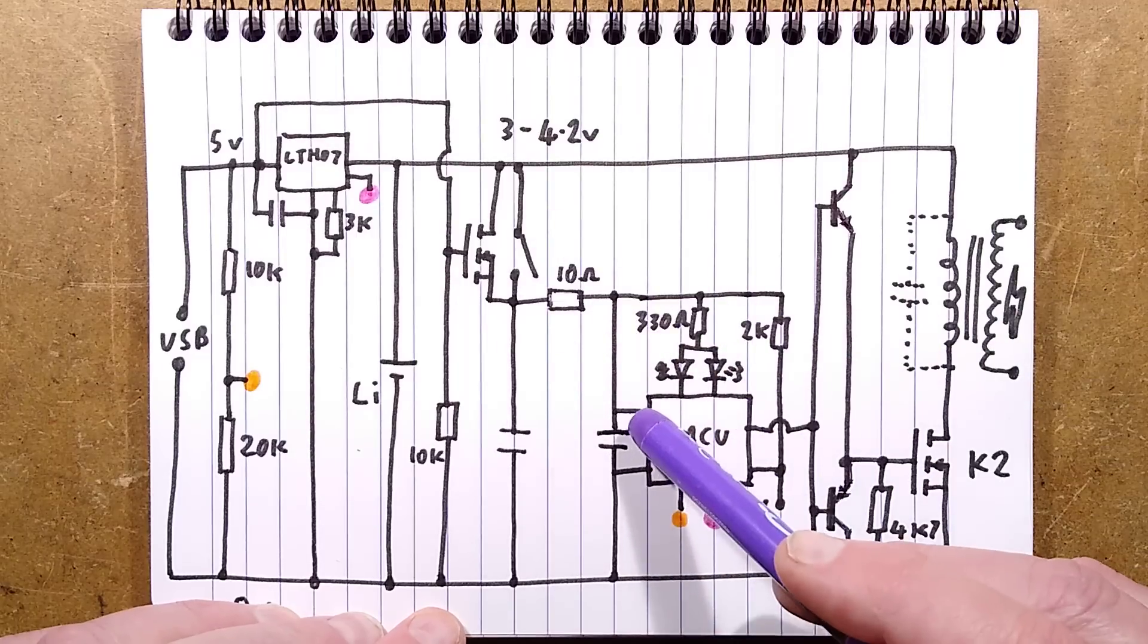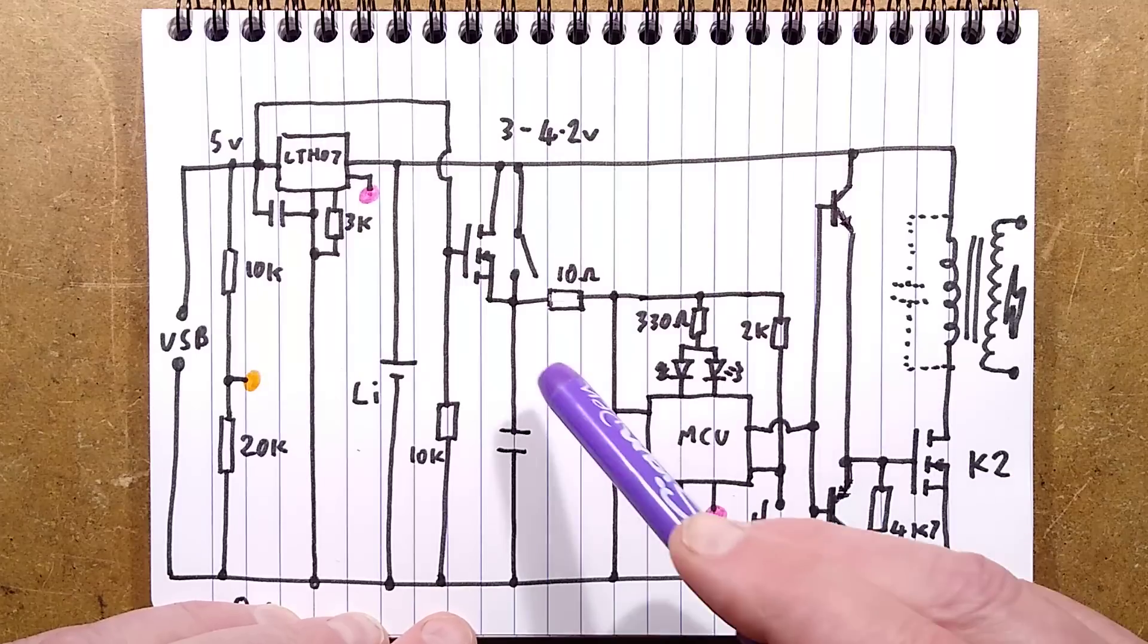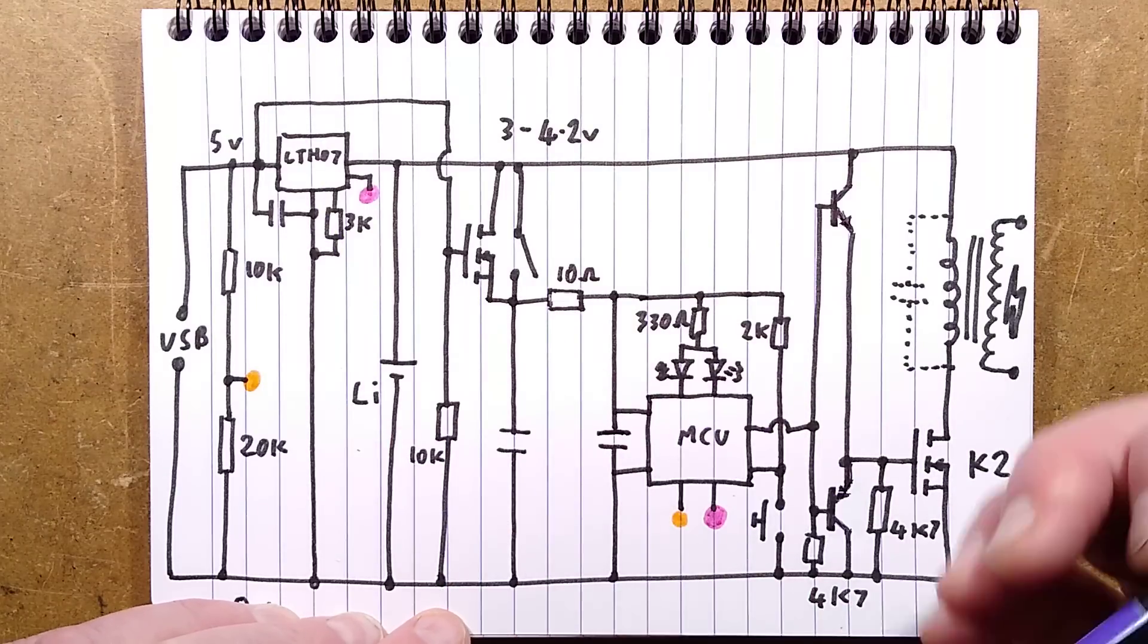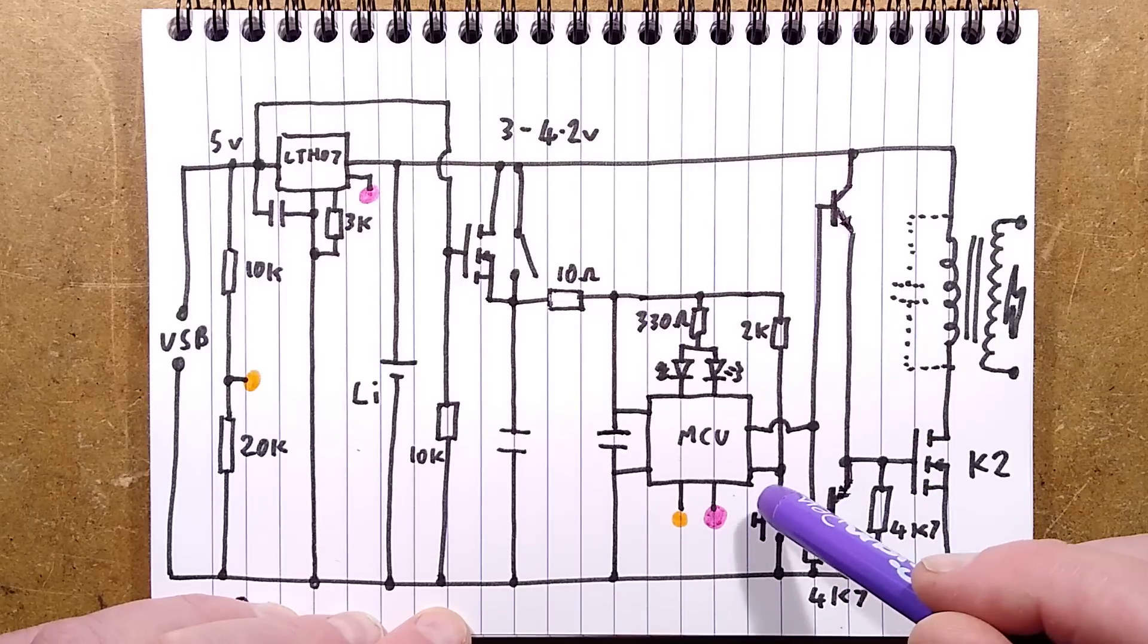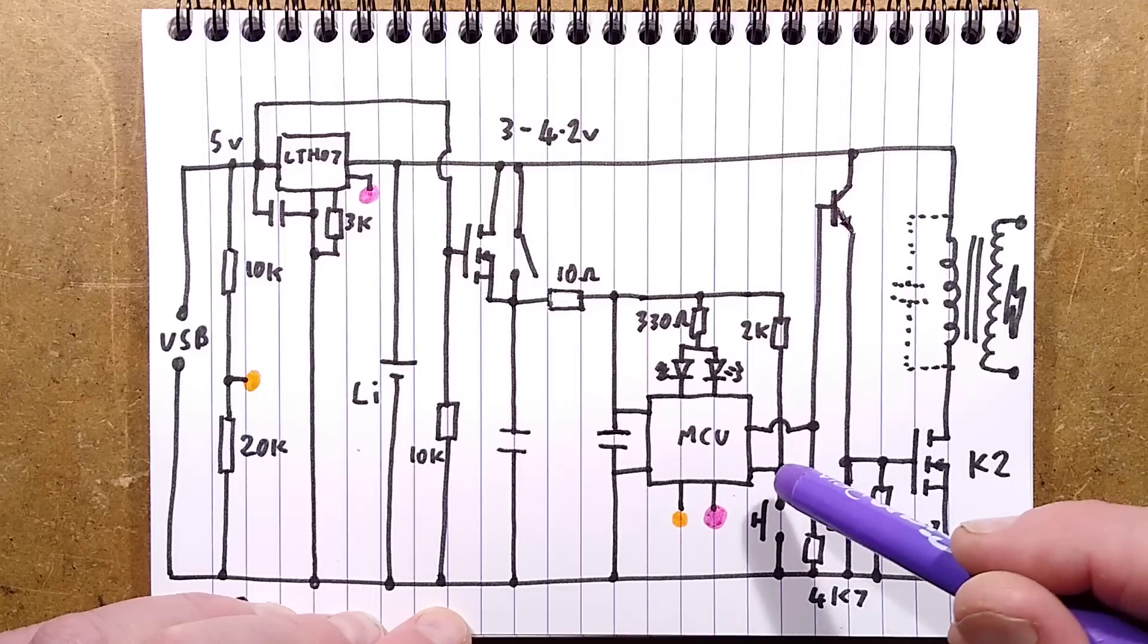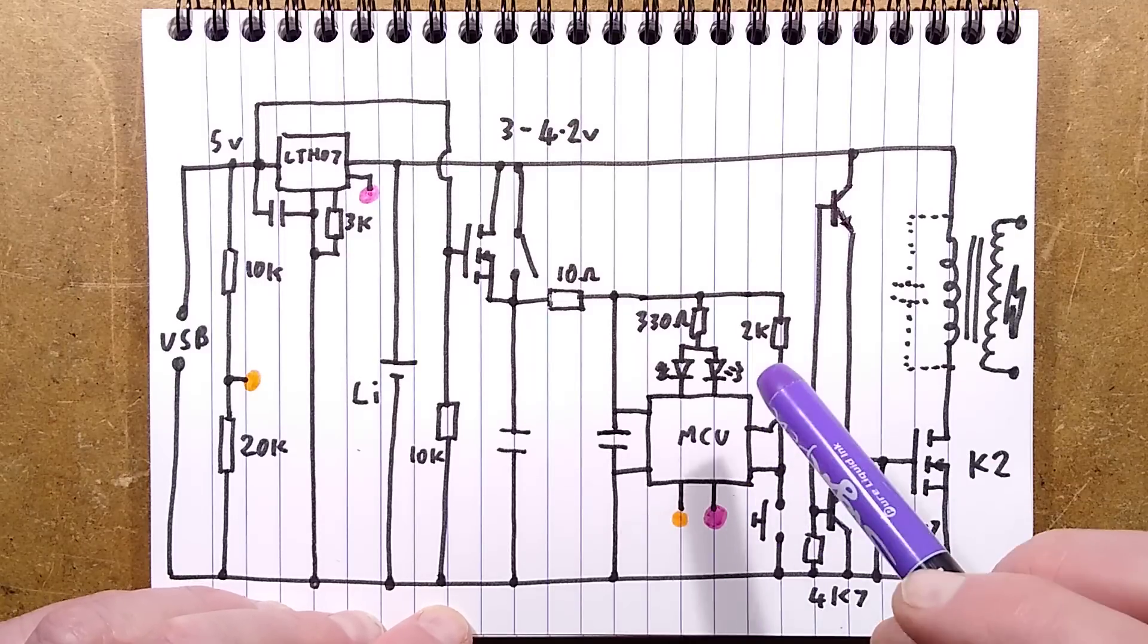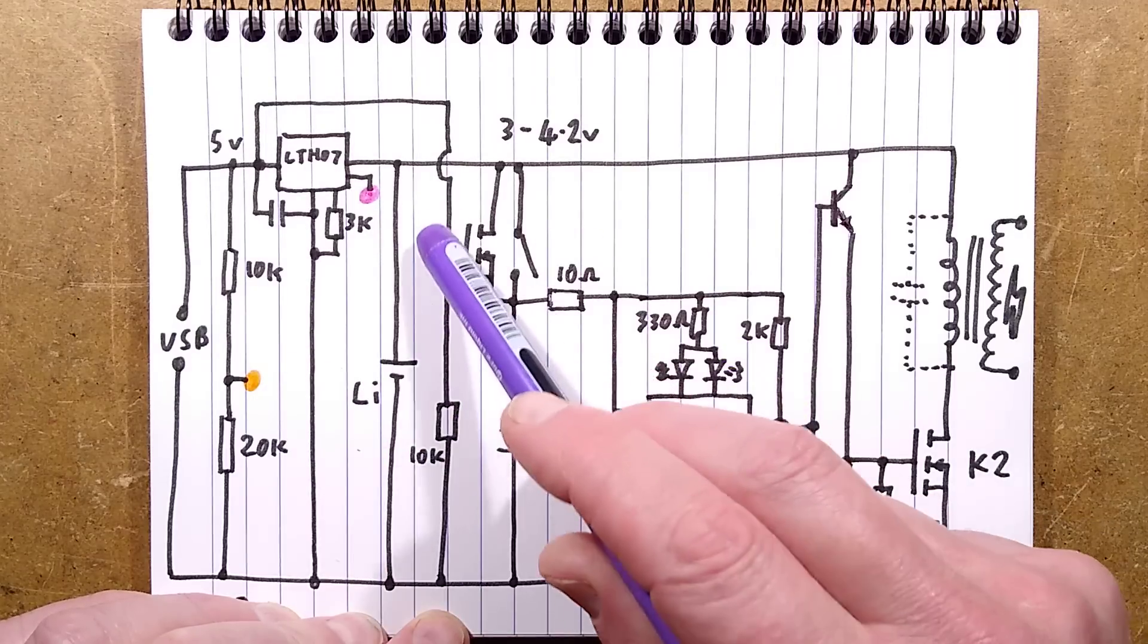Because the microcontroller is doing the charge indication with its LEDs, it powers up and detects the signal from the charge chip. At the moment, the green light indicates it's charged, even though it's not charging. That makes me wonder if either the LTH7 or this MOSFET has failed.